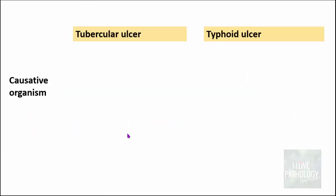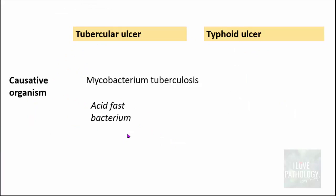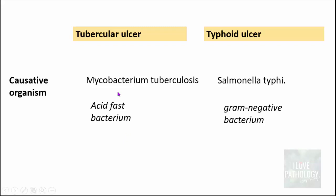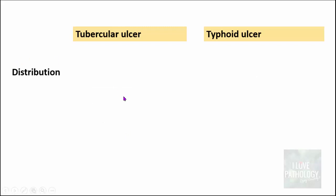The causative organism of tubercular ulcer is Mycobacterium tuberculosis, which is an acid-fast bacterium, whereas the causative organism of typhoid ulcers is Salmonella typhi, which is a gram-negative bacterium.